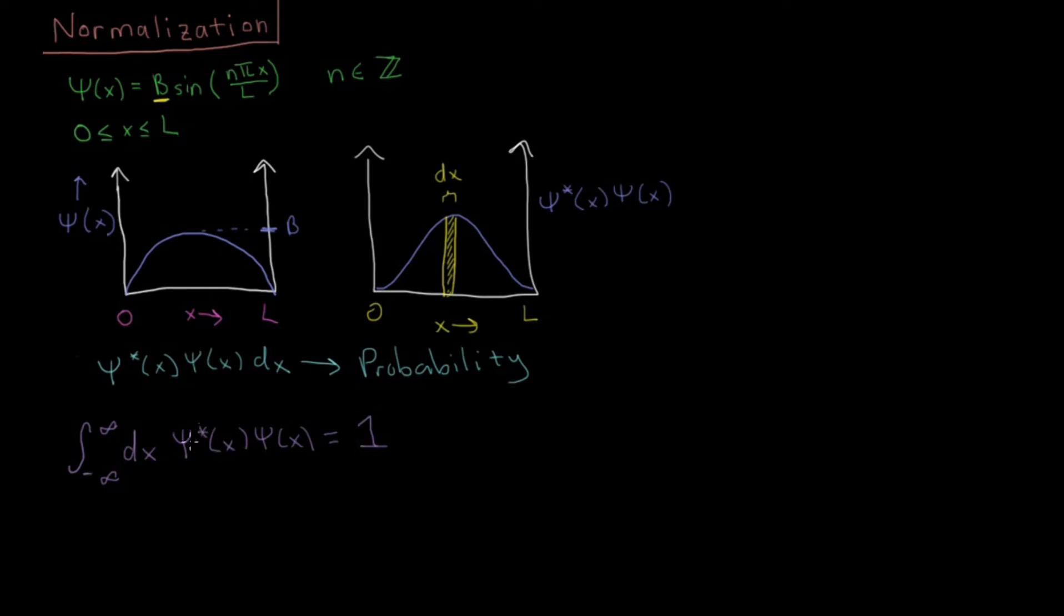Let's substitute in our value of the wave function for this specific case and start figuring out what this constant b is. This constant b is going to be called the normalization constant because its value is going to ensure that the wave function is normalized and we will find the particle somewhere in space.